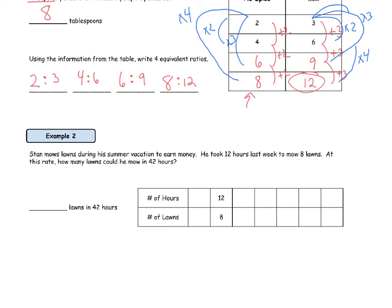Let's move to example two. Stan mows lawns during his summer vacation to earn money. He took 12 hours last week to mow eight lawns. At this rate, how many lawns could he mow in 42 hours? We know that the ratio of number of hours to the number of lawns is 12 to 8. We need to figure out how many lawns Stan can mow in 42 hours. I'm looking at this ratio of 12 to 8 — we eventually need to get to 42 hours. The problem is I can't think off the top of my head what 12 times something equals 42.